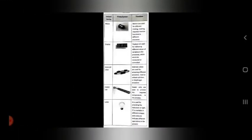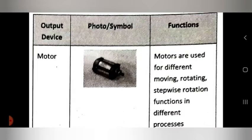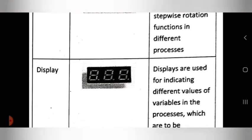Now we see the output devices. The first output device is the motor. Here is the symbol and photo for the motor. The function is that motors are used for different moving, rotating, or stepwise rotation functions in different processes.